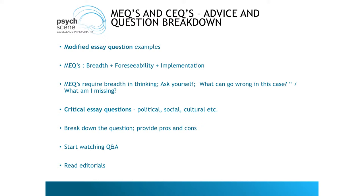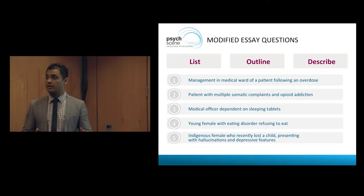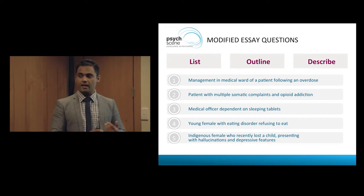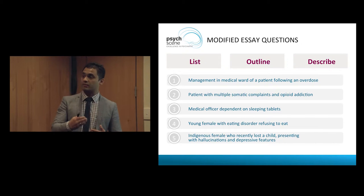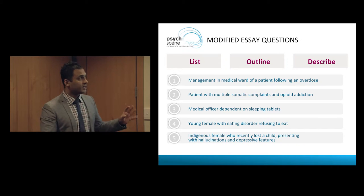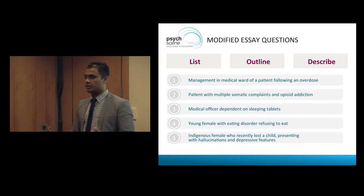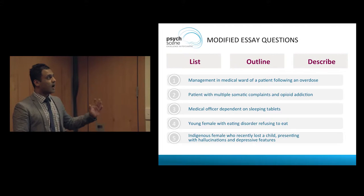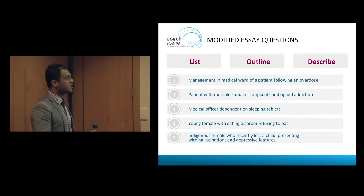We've talked about EMQs and critical analysis — now let's come to the Modified Essay Question (MEQ). There are three types of questions they would ask: list, outline, and describe. 'List' literally means you can give a bullet point list. 'Outline' requires a little bit of justification for each point. 'Describe' is in more detail. This matters because if it says 'list' and you end up describing, you've lost time.